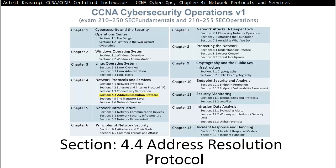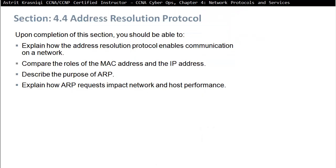On this video we are covering CCNA CyberOps Chapter 4, Network Protocols and Services. This is section 4.4, Address Resolution Protocol ARP. Upon completion of this section you should be able to explain how ARP enables communication on the network, compare the role of the MAC address and IP address, describe the purpose of ARP, and explain how ARP requests impact network and host performance.